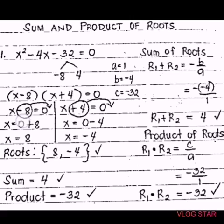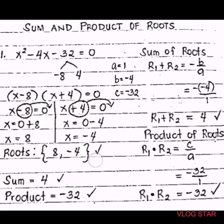x minus 8 equals 0, and on the other side, x plus 4 equals 0. Transpose negative 8 to the other side — it becomes 0 plus 8, which is 8. Transpose positive 4 to the other side — it becomes negative 4, so 0 minus 4 is negative 4. Therefore, since we get the values of x which are 8 and negative 4, the roots are 8 and negative 4.